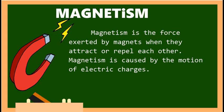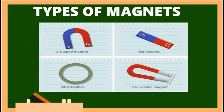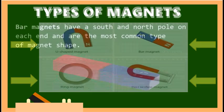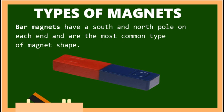Here are the different types of magnets: we have the U-shaped magnet, the bar magnet, the ring magnet, and the horseshoe magnet. A bar magnet has a south and north pole on each end and is the most common type of magnet.